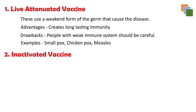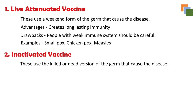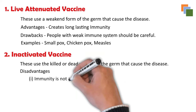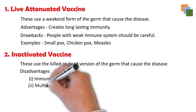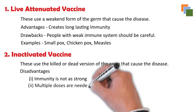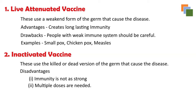Examples of live attenuated vaccines include smallpox, chickenpox, and measles. The second type is inactivated vaccines, which use the killed or dead version of the germ that causes the disease. The immunity provided in this case is not as strong as with attenuated vaccines, and hence multiple doses may be needed to get the necessary immunity. Examples include hepatitis A, flu, and polio.